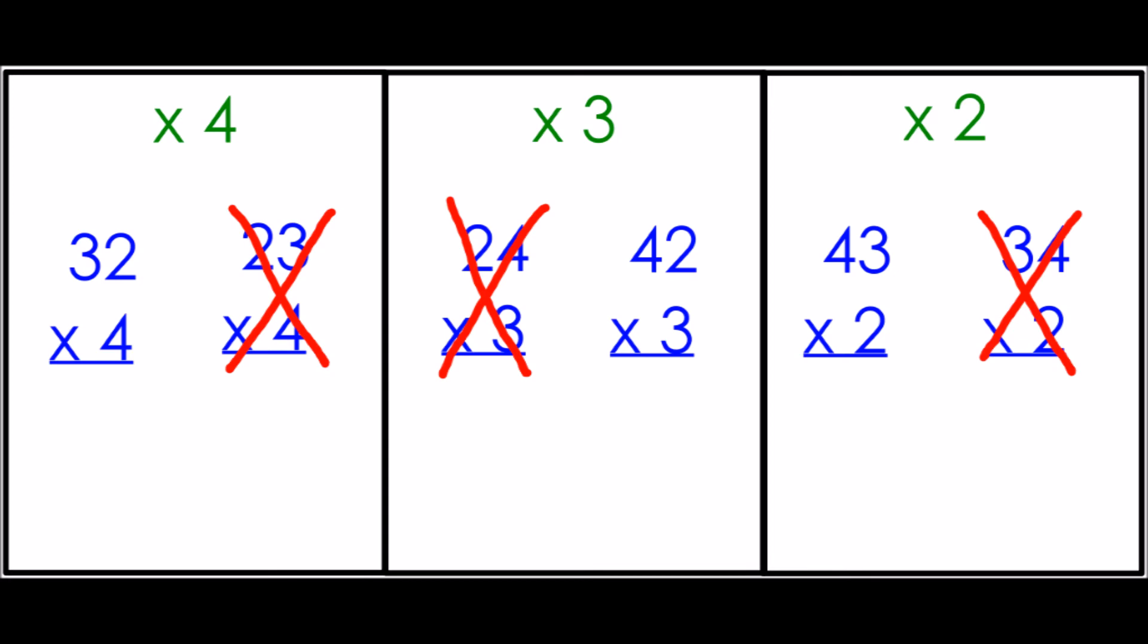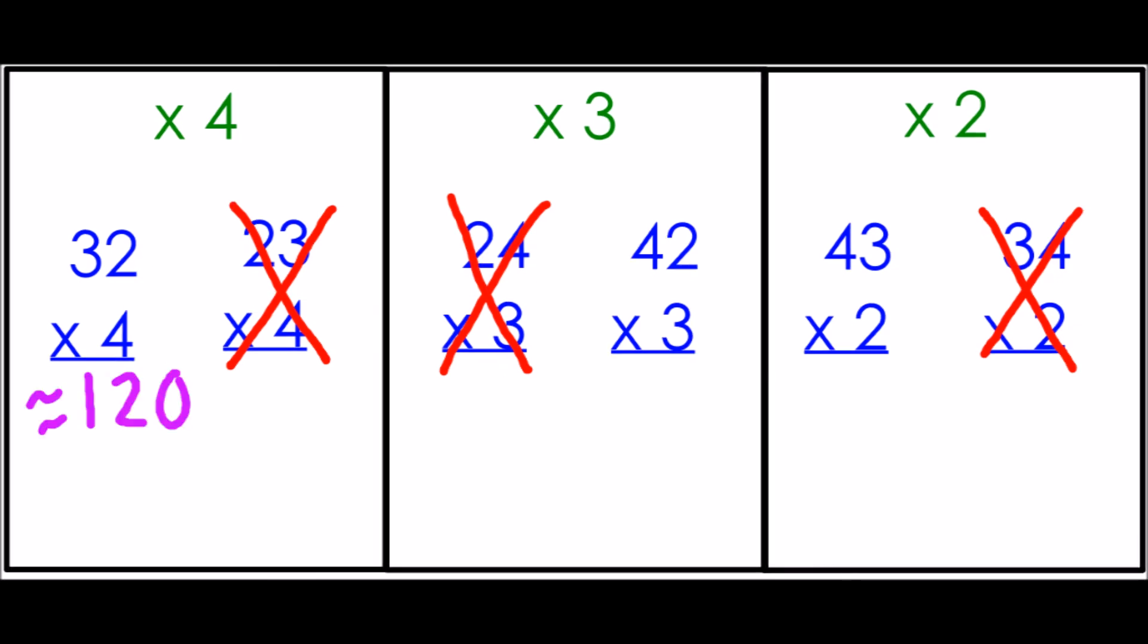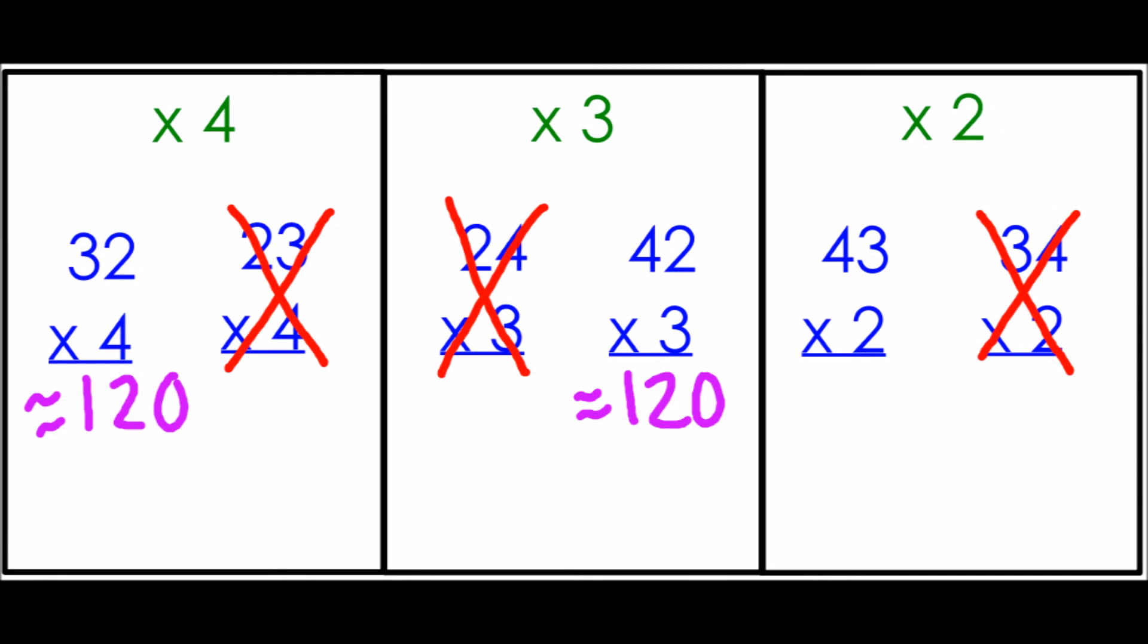Now before I actually get into multiplying, I thought the next step would be to do some estimation. So 32 times four is close to 30 times four. If I round 32 down to 30 and 30 times four is 120. So that answer is going to be close to 120. Let's look at 42 times three. 42 rounds down to 40. 40 times three is also 120. So that product will also estimate to be about 120.